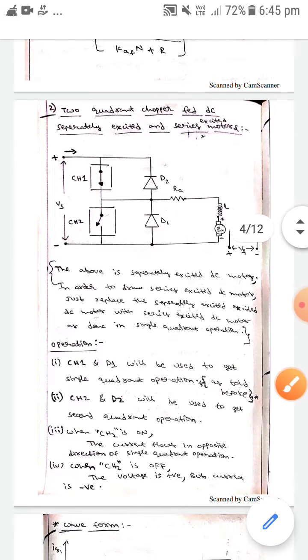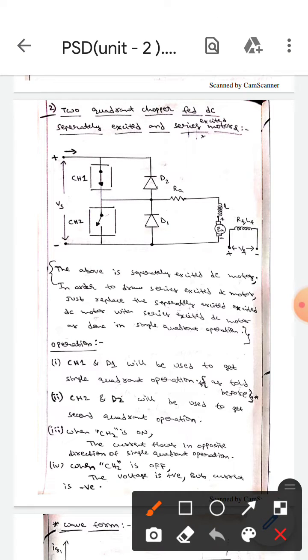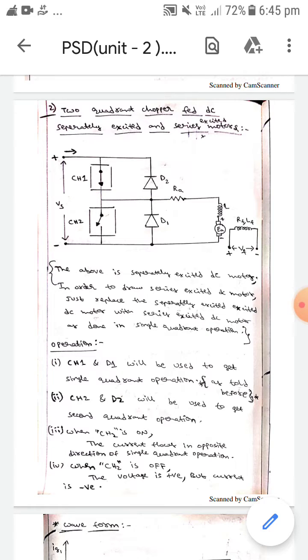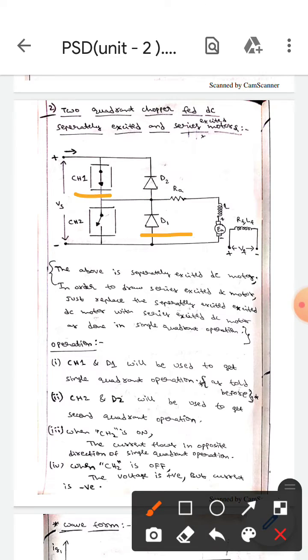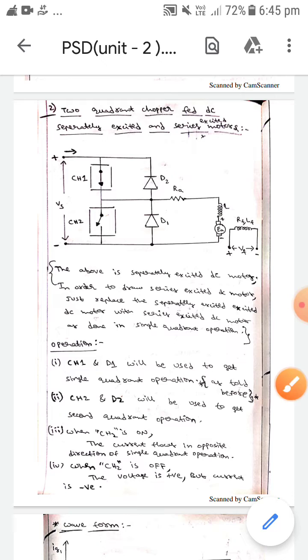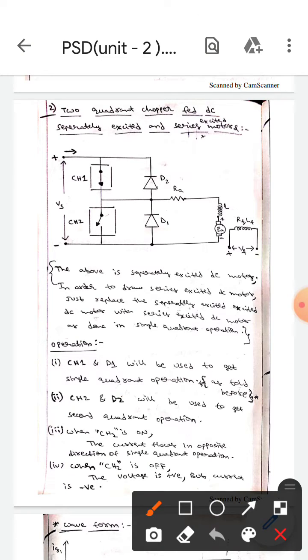Let's discuss the operation. Here there is CH1 and D1, and CH2 and D2. At first, CH1 and D1 will be used to get single quadrant operation as I told you before in the previous video.